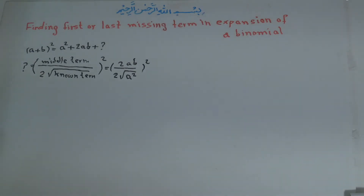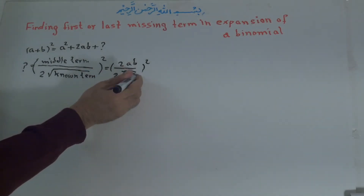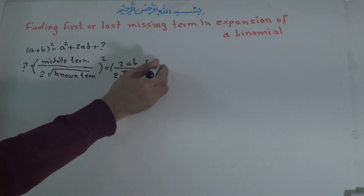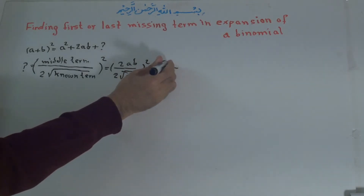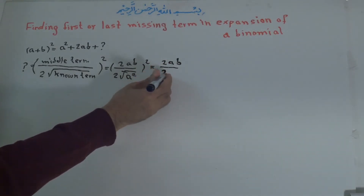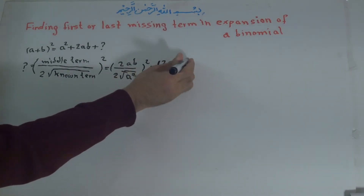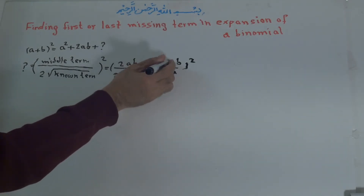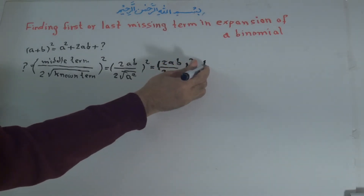Now, what we do: the square root is the opposite of the power of 2, so we cancel those. x is equal to 2ab over 2a, all squared. Now, we cancel 2 with 2, and a with a, leaving b — b to the power of 2.